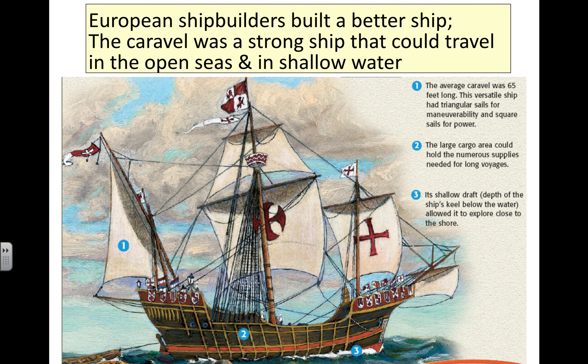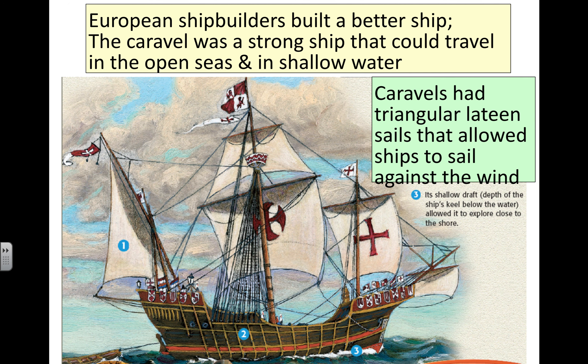Shipbuilding also advanced. The caravel — put that on the left — was a much stronger and better ship that could travel in open seas and shallow water. It was 65 feet in length. The triangular sail was a big deal because it made the ship far more aerodynamic and allowed far more control over direction. The combination of the triangular sail and the square sail made for precise navigation. The large cargo area was very important for long voyages lasting multiple months.